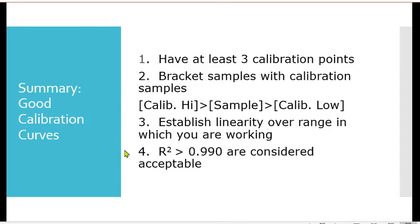So that is the point. Here's the summary that I would say. You need at least three calibration curves for anything you're doing in the academic labs. And if you're working out of academics, then you're going to want to do, as you go on and do more research, at least five calibration points. You need to bracket samples between your high and low calibration points. You want to establish linearity over the range in which you are working. And just to kind of put this at ease, if you're doing acceptable research work, an R squared greater than 0.990 would be considered acceptable.